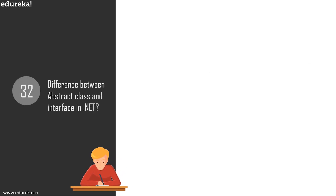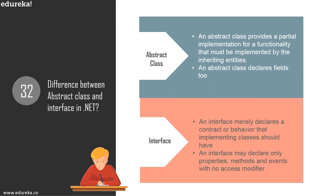Question 32: what is the difference between an abstract class and an interface in .NET? An abstract class provides a partial implementation for functionality that must be implemented by inheriting entities and can declare fields. An interface mainly declares a contract or behavior that implementing classes should have, and may declare only properties, methods, and events — with no access modifiers.